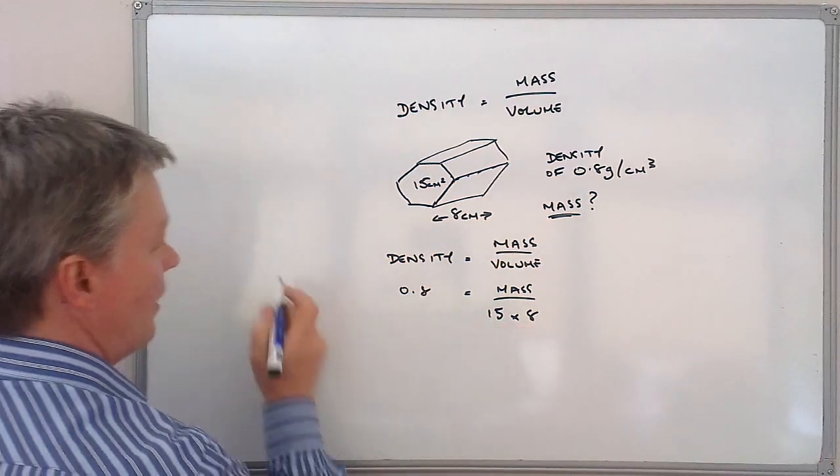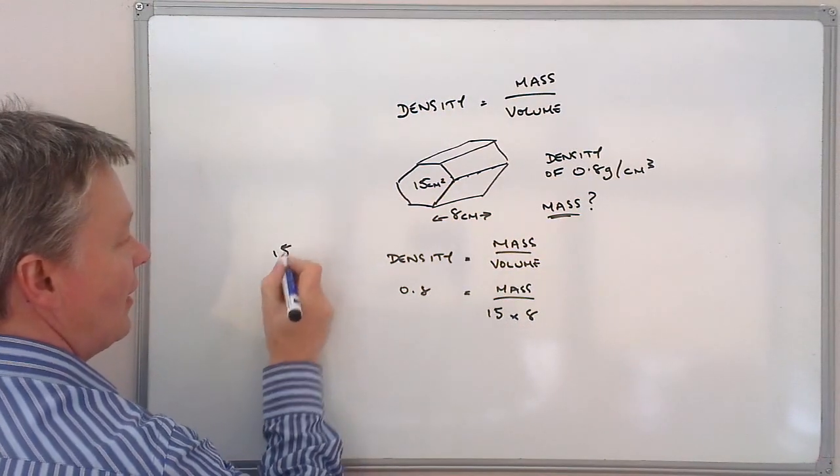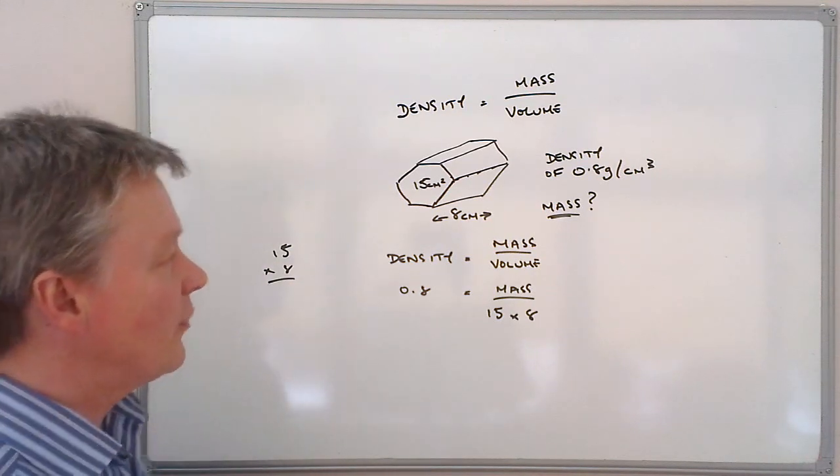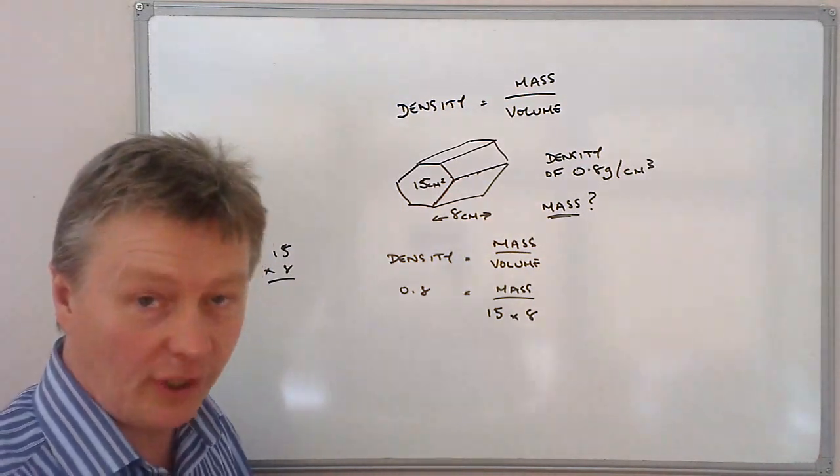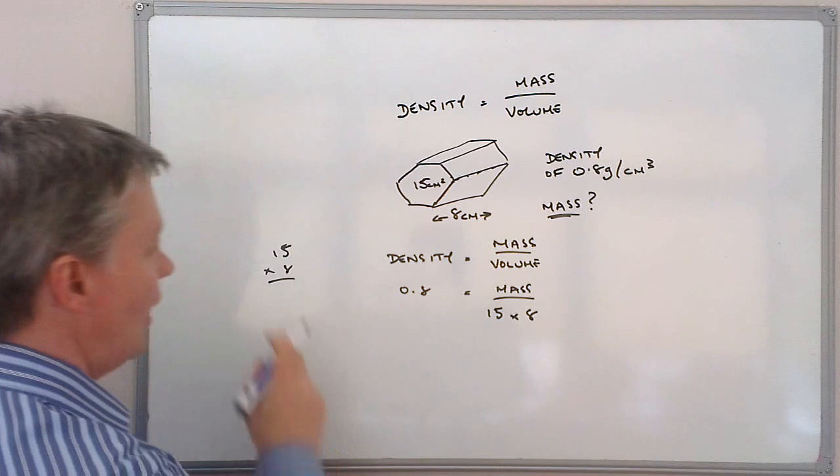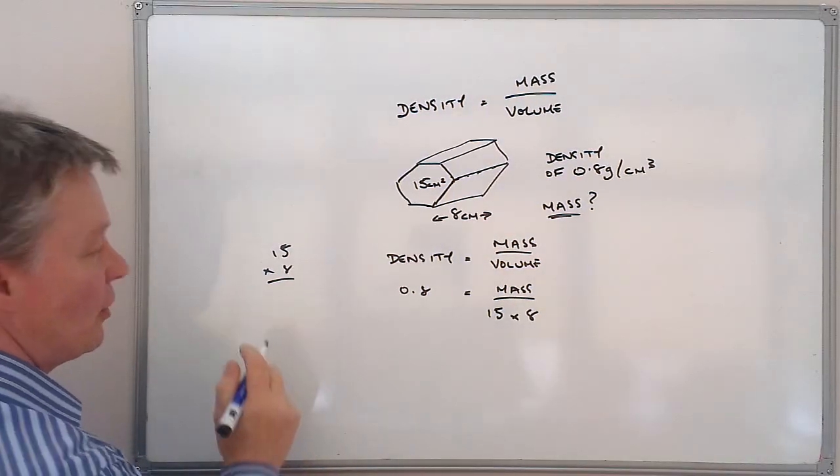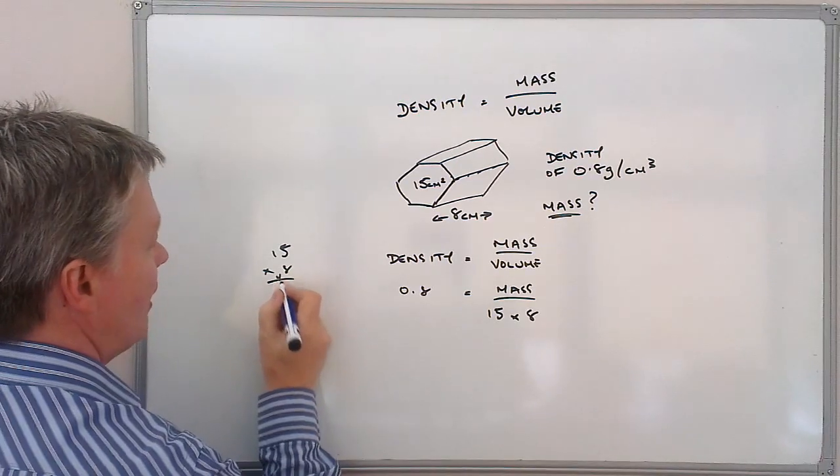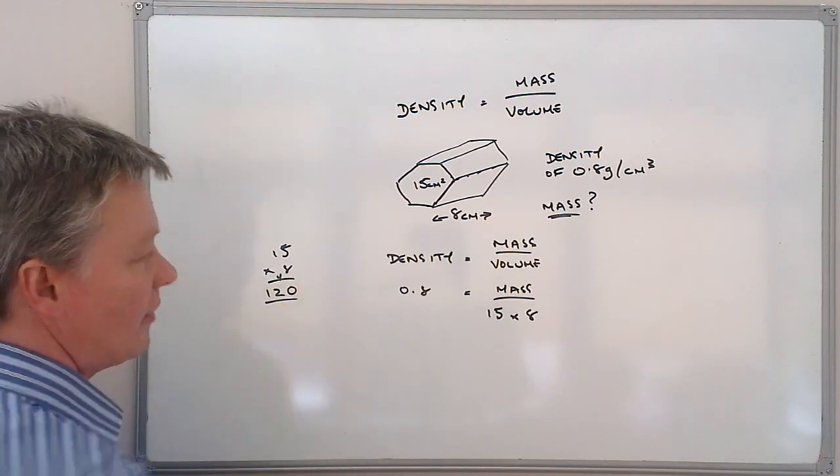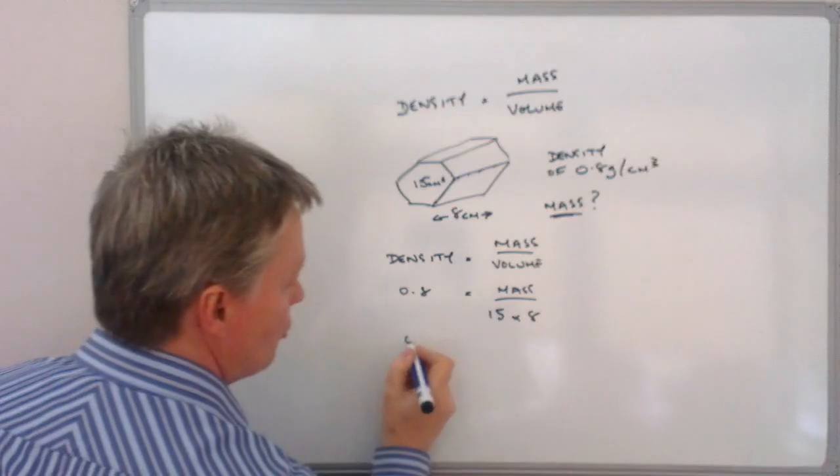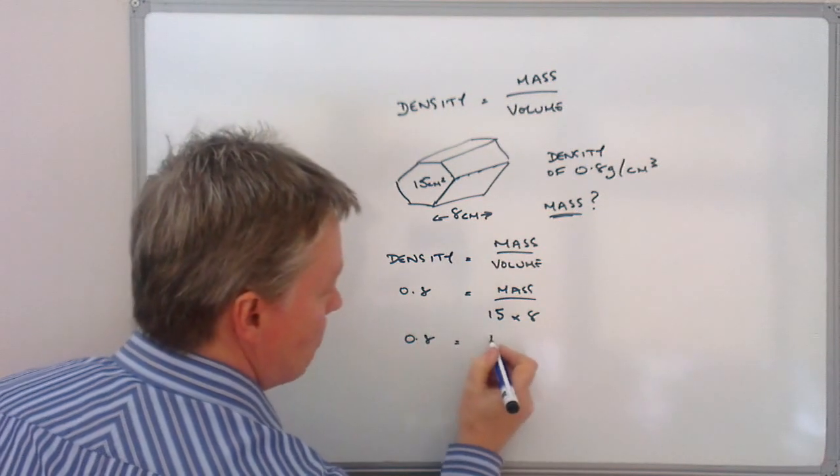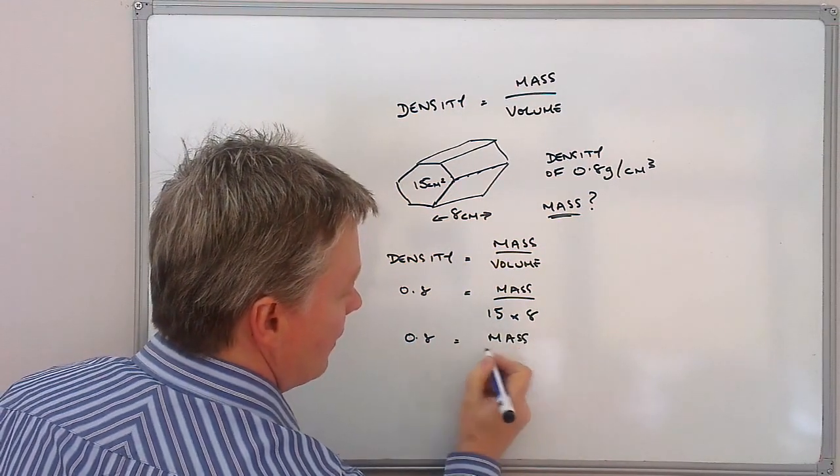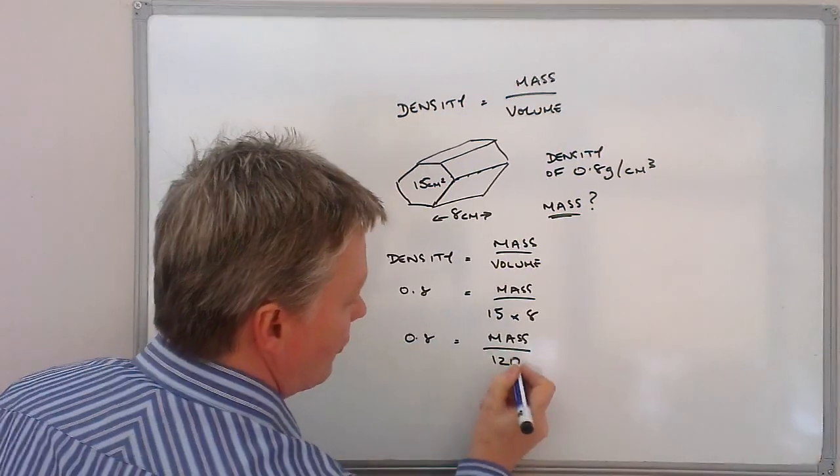So 15 times 8. If I just do this on the side, I think with these sorts of questions they generally tend to be calculator questions, but I'm just going to do it as short division at the side here. So 5 times 8 is 40 and that's going to be 120. So in other words, 0.8 equals mass divided by 120.